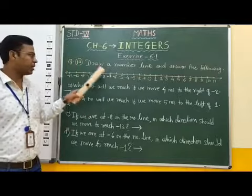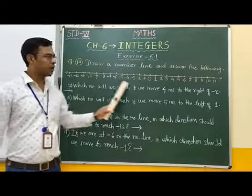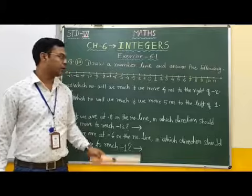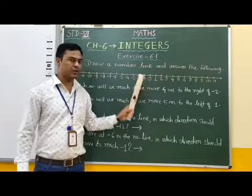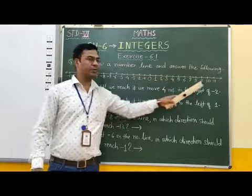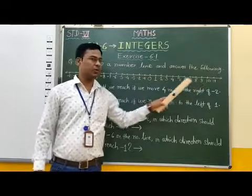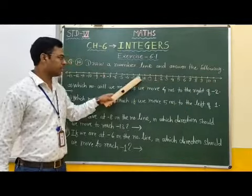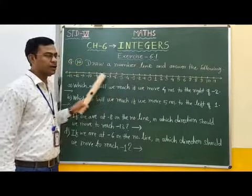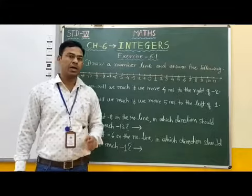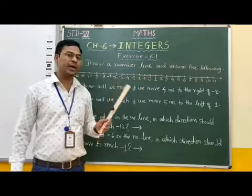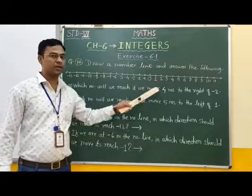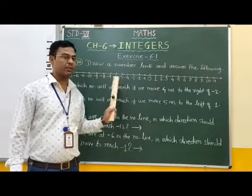Students, if you observe here, I have drawn a number line. On this number line, this point is 0. On the right side of 0, there are positive numbers, and on the left side of 0, there are negative numbers. We have to write answers of these questions by observing this number line.